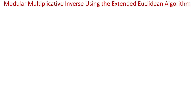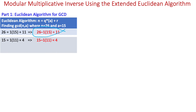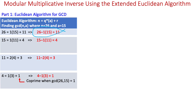Let's do the complete computation using the extended algorithm. Starting with Part 1, we find the GCD of n and a using the standard Euclidean algorithm, writing each division in the form n equals q times a plus r. We also rearrange each equation to isolate the remainder, which we will use for backward substitution in the extended algorithm. Continuing through each division step with the same rearrangement, we finally get GCD equals 1, confirming n and a are co-prime and satisfying the required condition to calculate the multiplicative inverse.